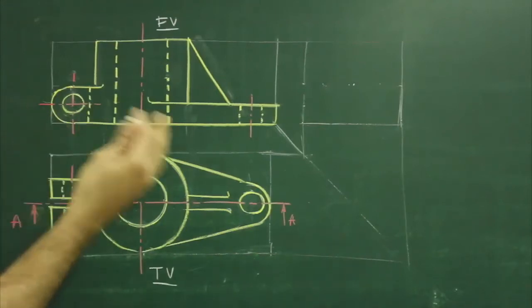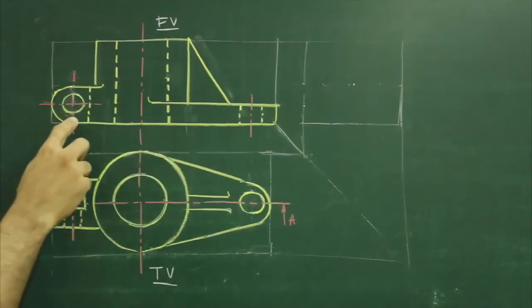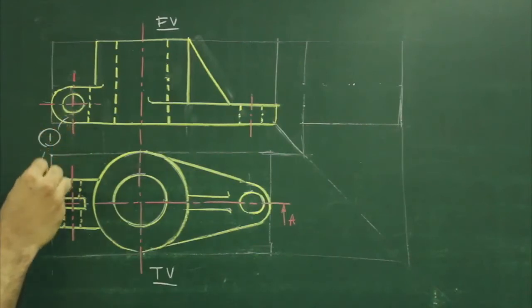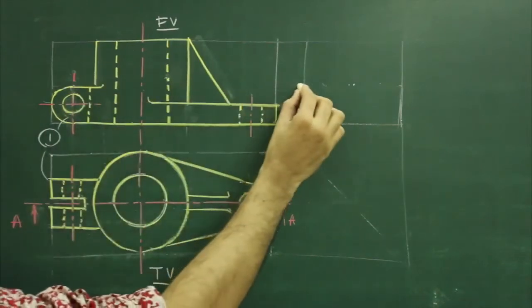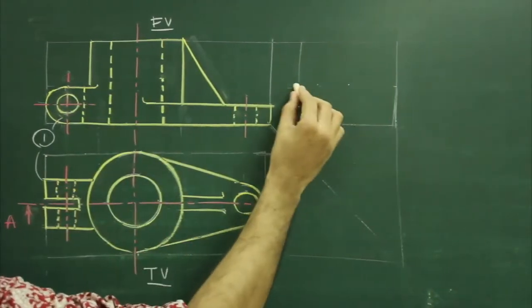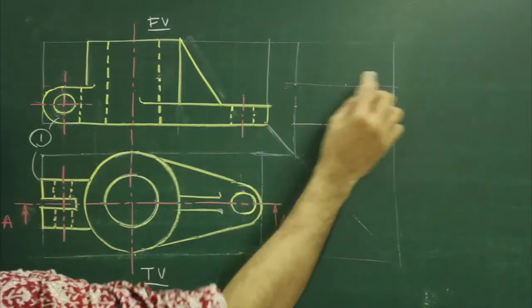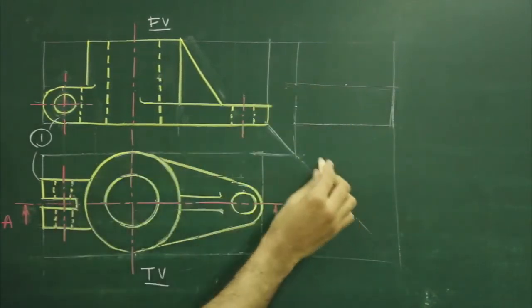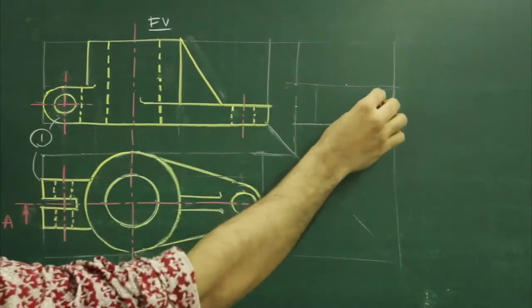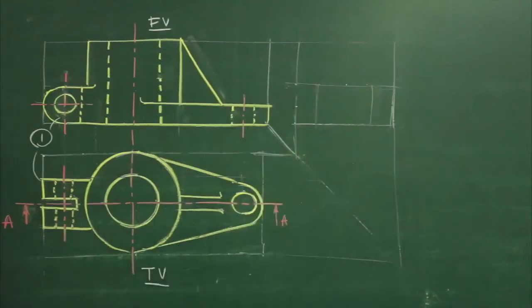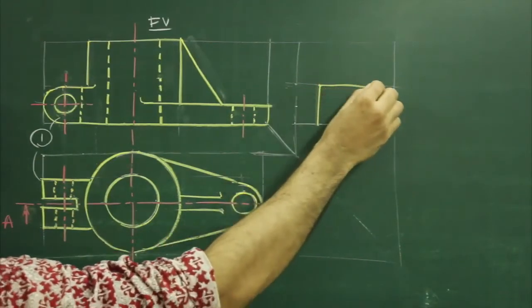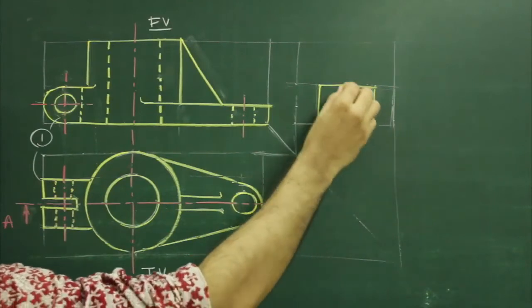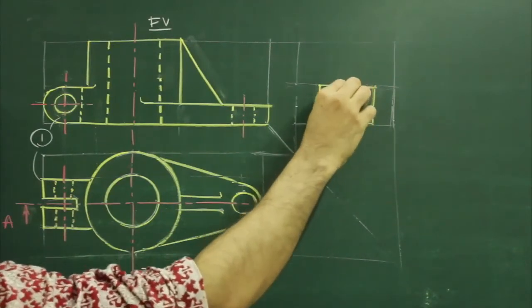We have to see from the left side and project to the right side. So, first we will start with this object and project it. When you project from here from the top view, we will get a rectangle, and there will be a slot in between.